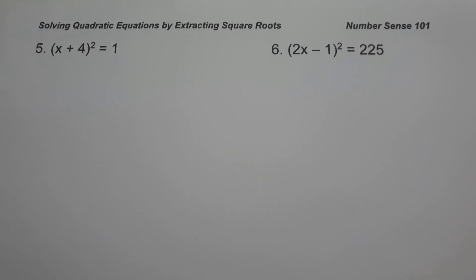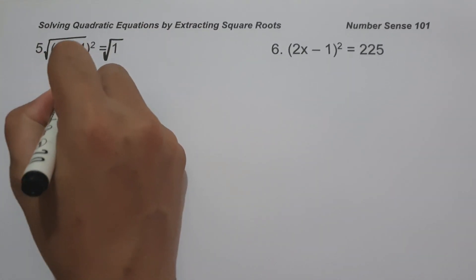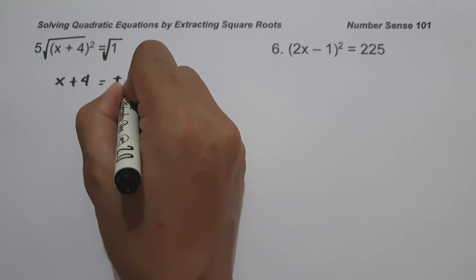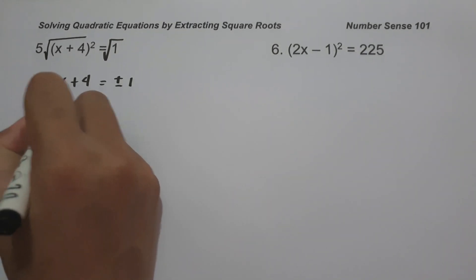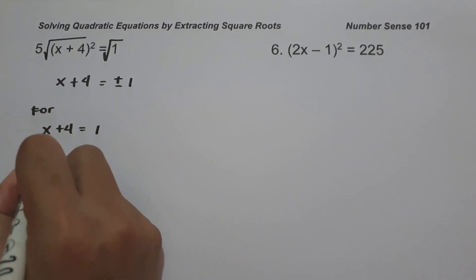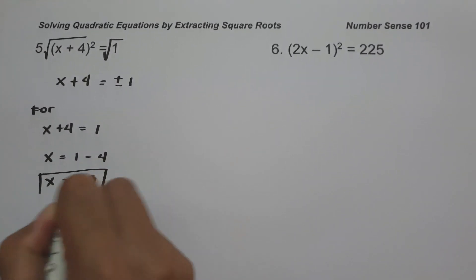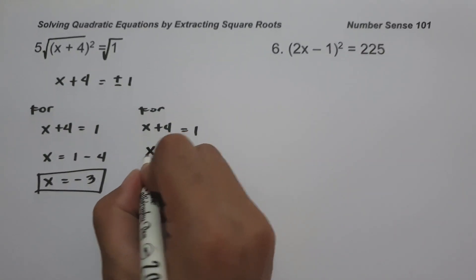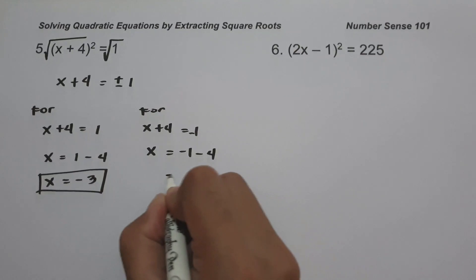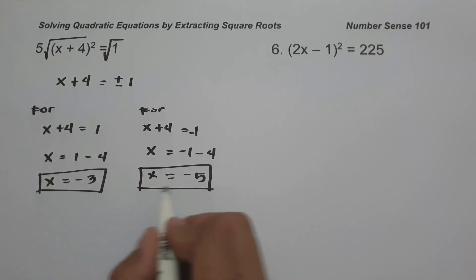On example number five, we have (x + 4)² = 1. To find the value of x, let us take the square root of both sides, giving us x + 4 = positive and negative 1. For x + 4 = 1, we get x = 1 - 4 = negative 3. For x + 4 = negative 1, we get x = negative 1 - 4 = negative 5. Therefore, the values of x are negative 3 and negative 5.